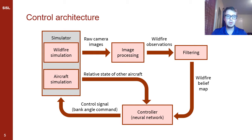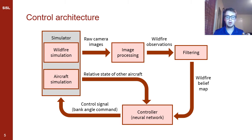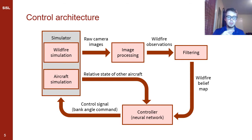You first have to define a simulator — in this case a wildfire simulator and an aircraft simulation. You then need to define some image processing to take raw images and produce wildfire observations: observations of the locations where fire is or is not present. You then have some filtering to compile these observations into a map of the wildfire spanning multiple observations, including wildfire locations not observed recently. We can then take that belief map along with the relative state of the other aircraft and combine this information into one control system using a neural network, whose output is a bank angle command or another signal that steers the aircraft.